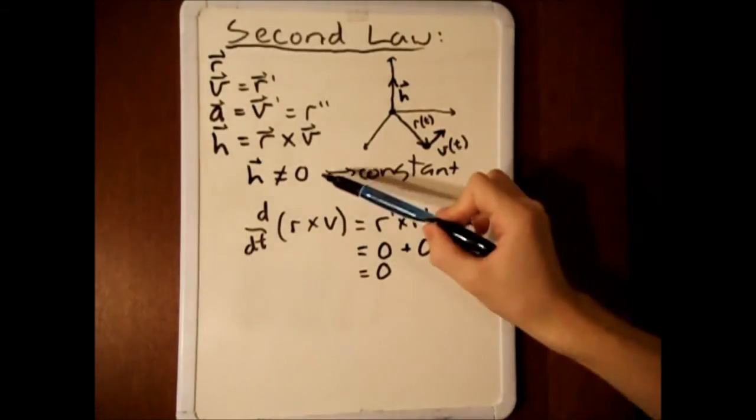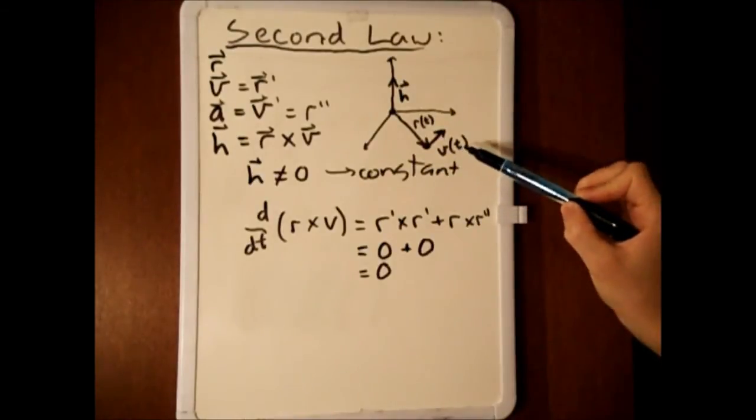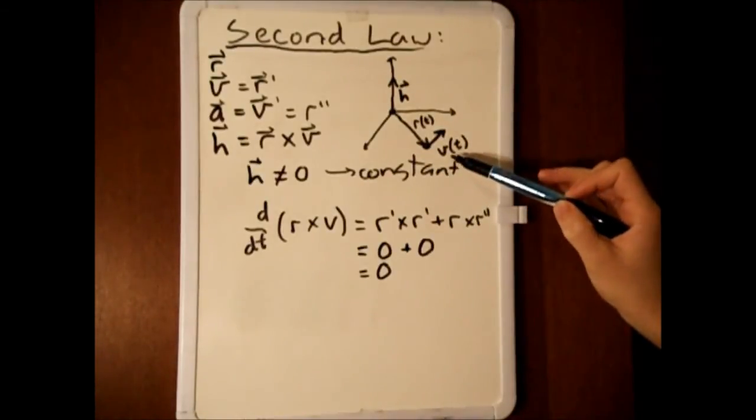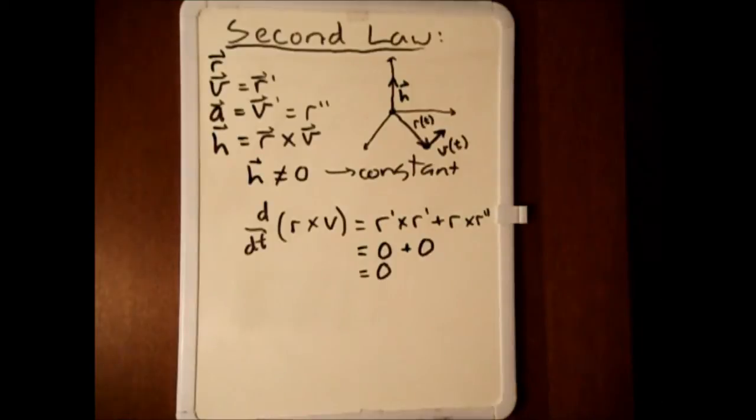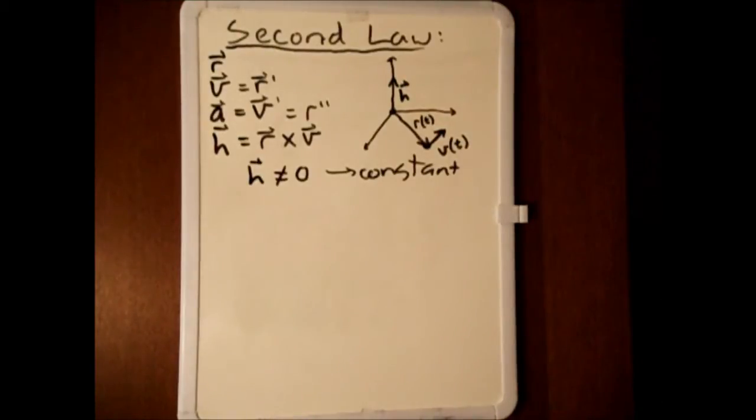We know the vector is also not zero because the planet will always have a velocity component and will always have a position component. Let us compute the value of h by first computing the vector v and crossing it with the vector r.